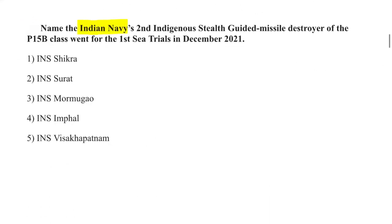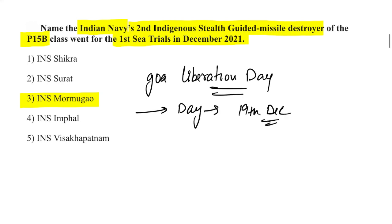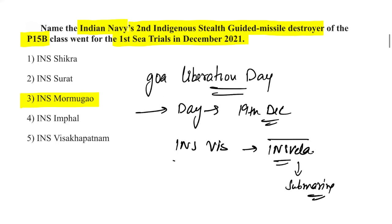INS Mormugao, the Indian Navy's second indigenous stealth guided missile destroyer of the Project 15B class, went for its first sea trials in December 2021. It was launched on Goa's Liberation Day, which is observed on 19th December. Also remember that INS Visakhapatnam and INS Vela — a submarine — were also commissioned into the Indian Navy.